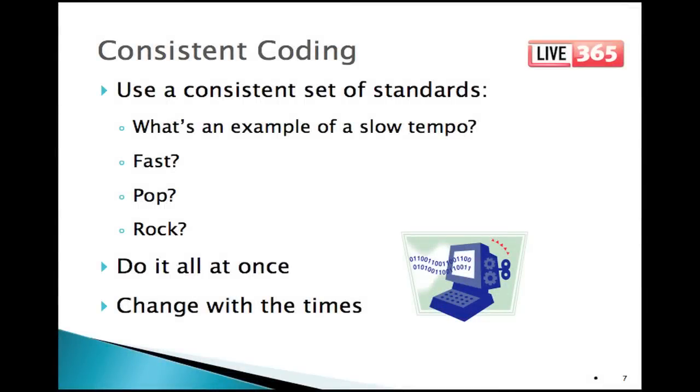Consistency is often overlooked when it comes to coding a music library. It's critical to use consistent standards so that you get a consistent mix of music. You want to maintain the same standards when coding slow songs or when coding medium songs. What's the difference between a slow and a medium? You have to know that going in when you start applying the codes. What's the difference between pop and rock or between hip-hop and pop? It's best to try to code everything all at once if you can. Know your standards and apply them evenly across the whole library.